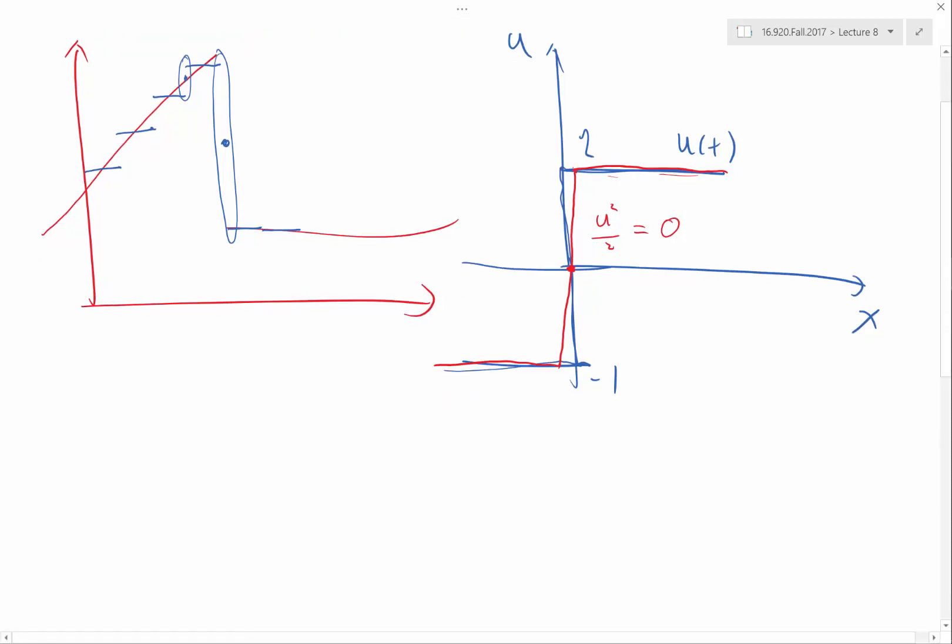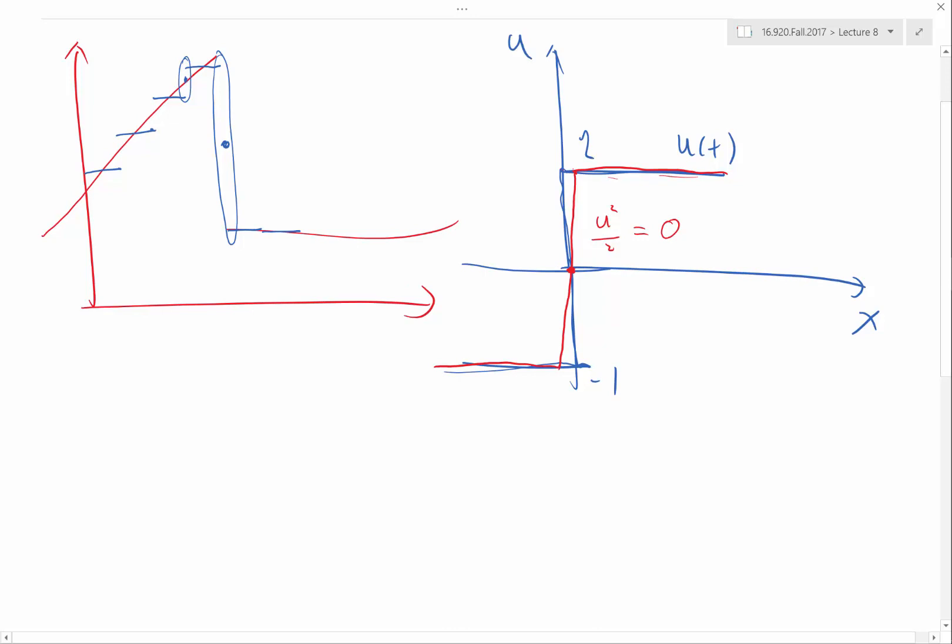This is because even though in the blue curve, it's the solution u at t, the red curve is u at t plus epsilon. The difference is that I have allowed the discontinuity to evolve for a little bit in a physical way.